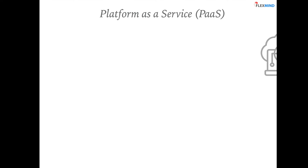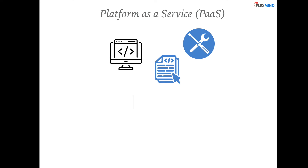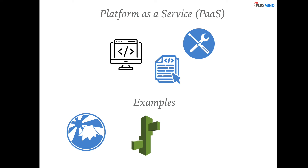Platform as a Service: imagine you want to host a website but don't have infrastructure. You have your code, libraries, and tools that a cloud service provider can support. What you need is a platform to deploy your code, tweak your settings, and be online in minutes rather than days. With PaaS you don't need to worry about underlying infrastructure, security, network, server, OS, or storage. Examples include Heroku, AWS Elastic Beanstalk, and Force.com.